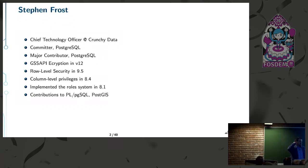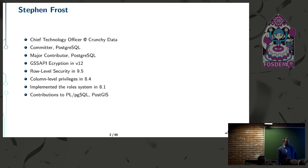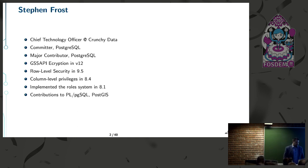I'm Stephen Frost, chief technology officer at Crunchy Data. I'm one of the Postgres committers and also a major contributor. I've worked on a bunch of different things — most recently GSS API encryption in V12, which is pretty awesome. I also did row-level security, column-level privileges, the role system, and contributions to other areas.